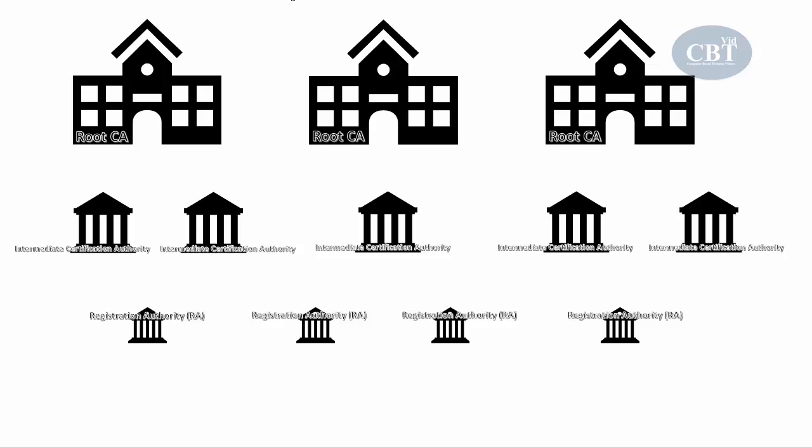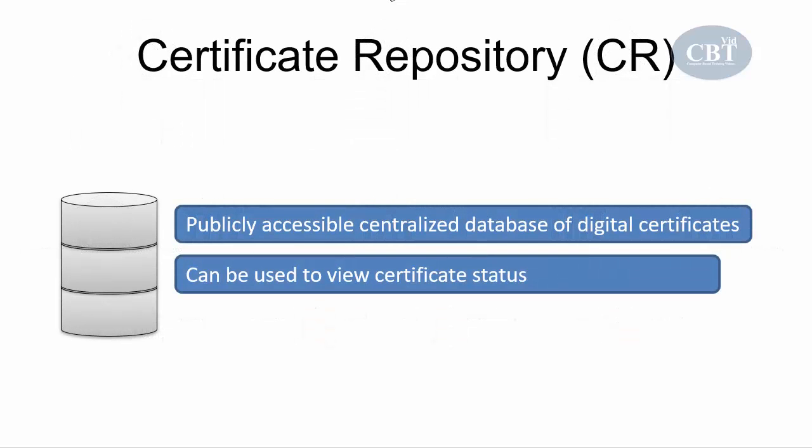For example, in a region we can have one or two certification authorities and many registration authorities. Those registration authorities receive all the information, verify it, perform the required tasks, and then pass it to the intermediate certification authorities to issue the certificate and send it to users. After certificates are issued, a robust, scalable, and online repository system is required so people can locate and access them. The certificate repository is a publicly accessible database of all digital certificates used to locate and view their status.